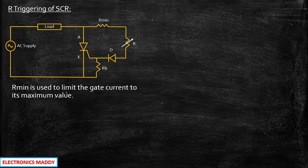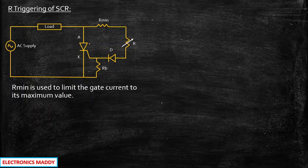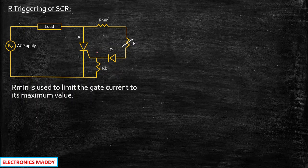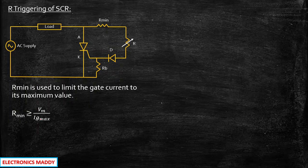R-min is used to limit the gate current to its maximum value. For example, the gate current required for the SCR to turn on is around 50 milliampere. R-min can be designed such that the current flowing through this path will not exceed 50 milliampere. R-min can be chosen as greater than or equal to Vm — the maximum voltage — divided by Ig-max, which is the maximum gate current required.